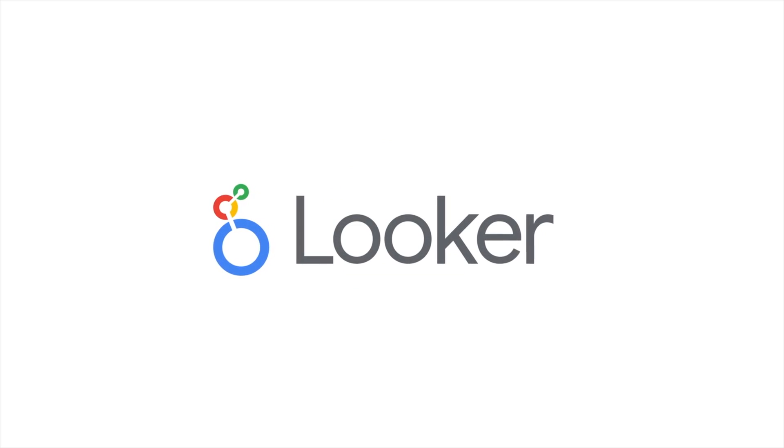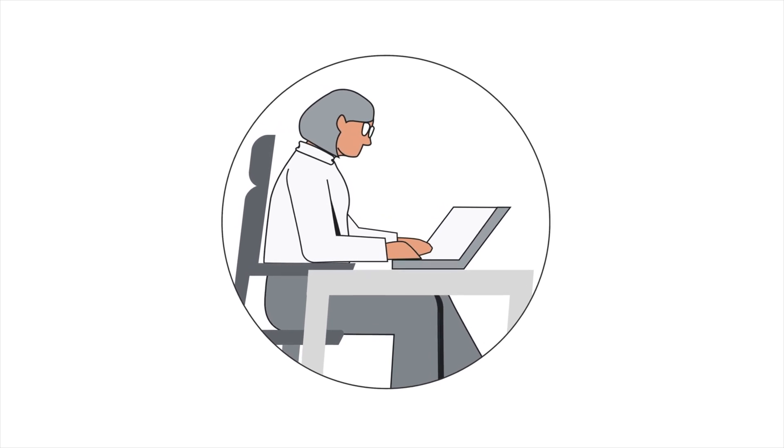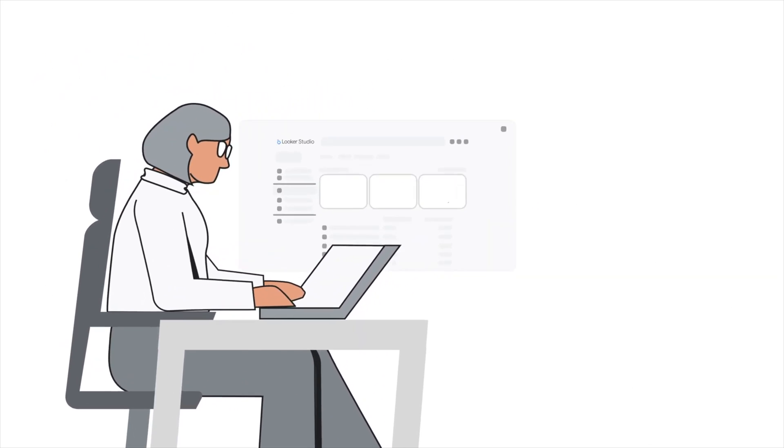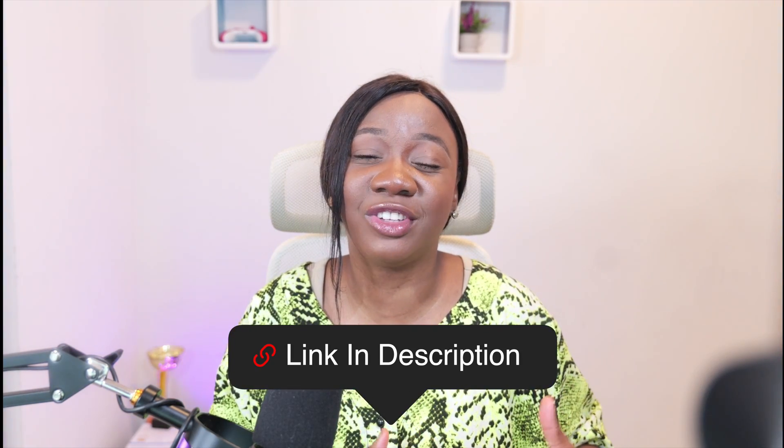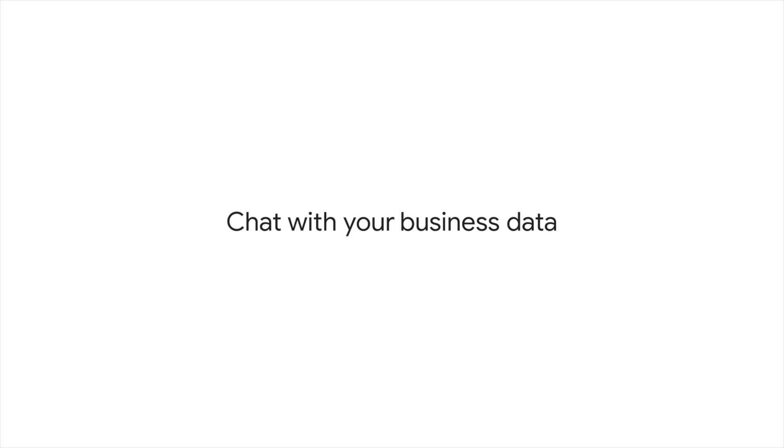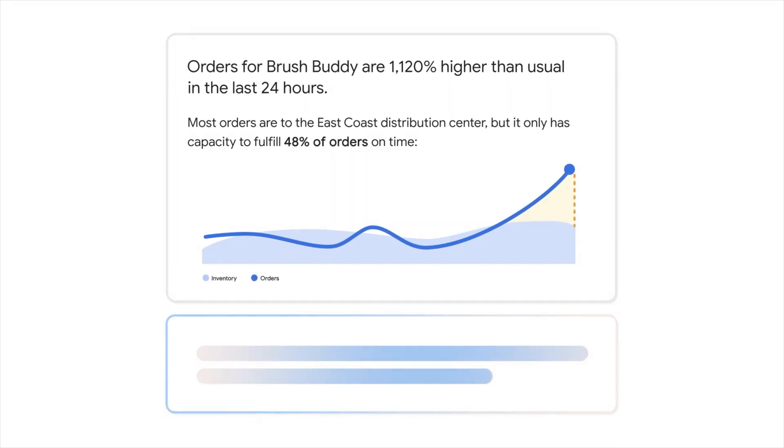The cherry on top is how Duet AI is now in Looker itself, and that's what I'm most interested in. Today we learn all you need to know about Duet AI in Looker. Looker is one of Google's business intelligence tools — a challenger BI tool. I've created a complete tutorial guide on how to get started with Looker, linked in the description. Duet AI in Looker brings direct integration of conversational AI and large foundational models that literally change the way you work with data.